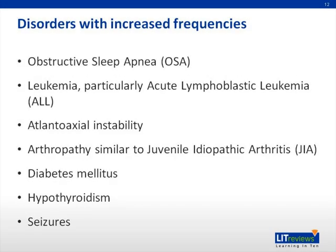Other health problems that occur with increased frequency among patients with Down syndrome include obstructive sleep apnea, leukemia (specifically ALL), atlantoaxial instability, arthropathy that presents similarly to JIA, diabetes, and seizures. These disorders occur more frequently than in the general population, but not so frequently as to warrant routine monitoring.